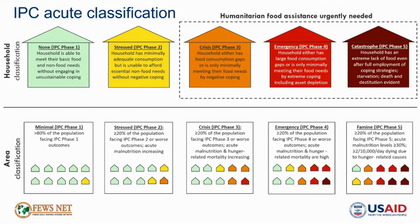At the area level, the phase definitions are quite similar to those at the household level, but the area level classifications also include criteria for incorporating population level data on acute malnutrition and mortality.